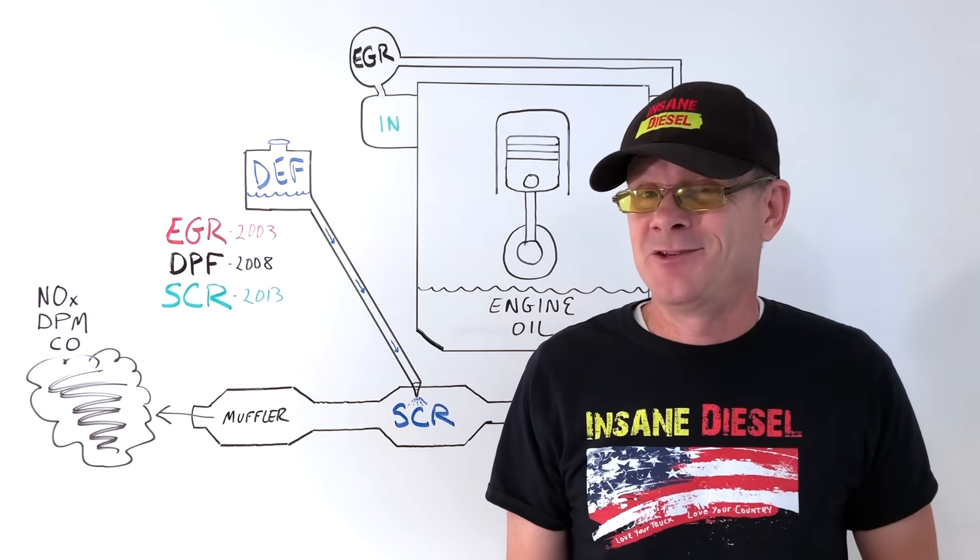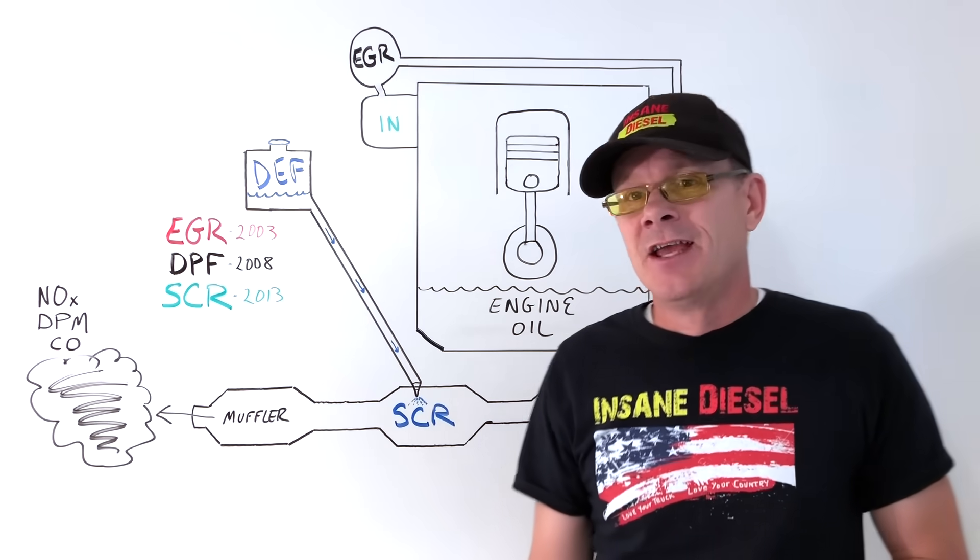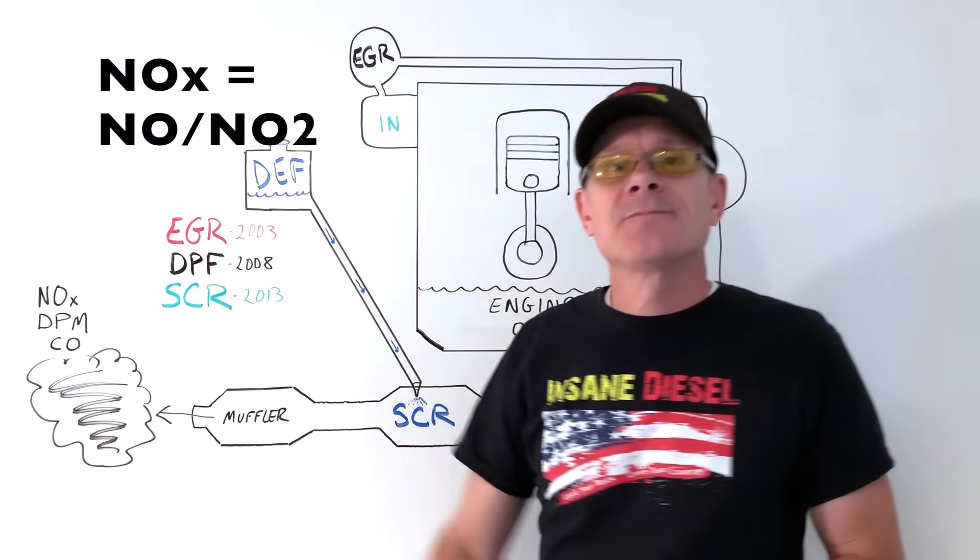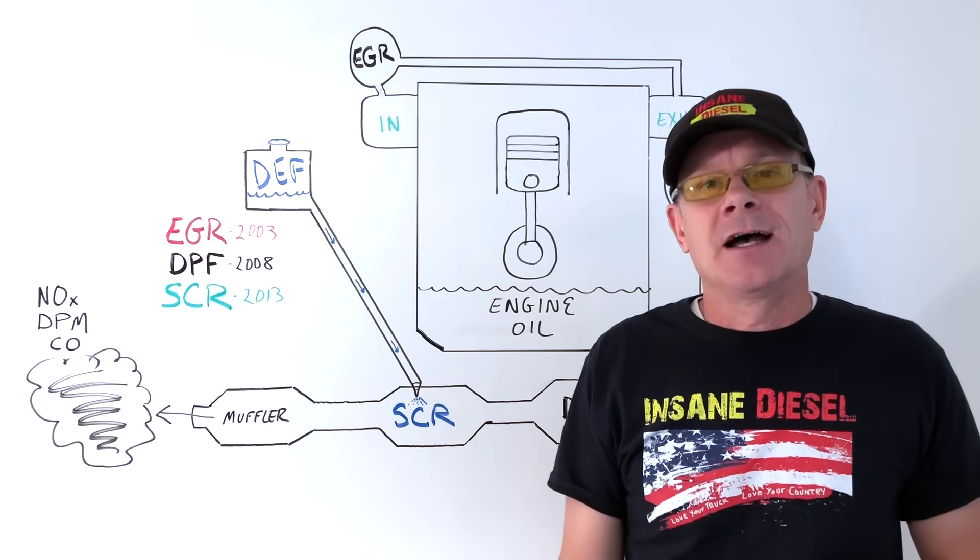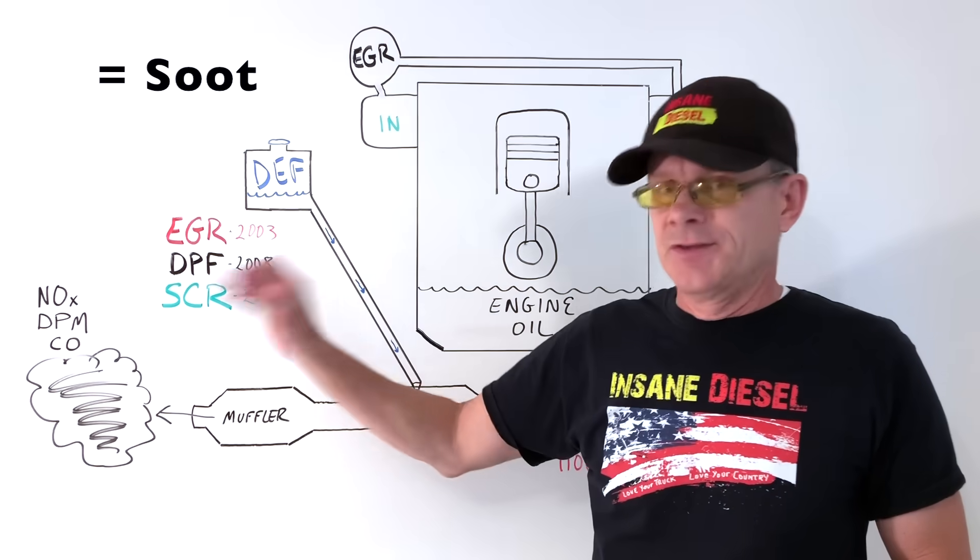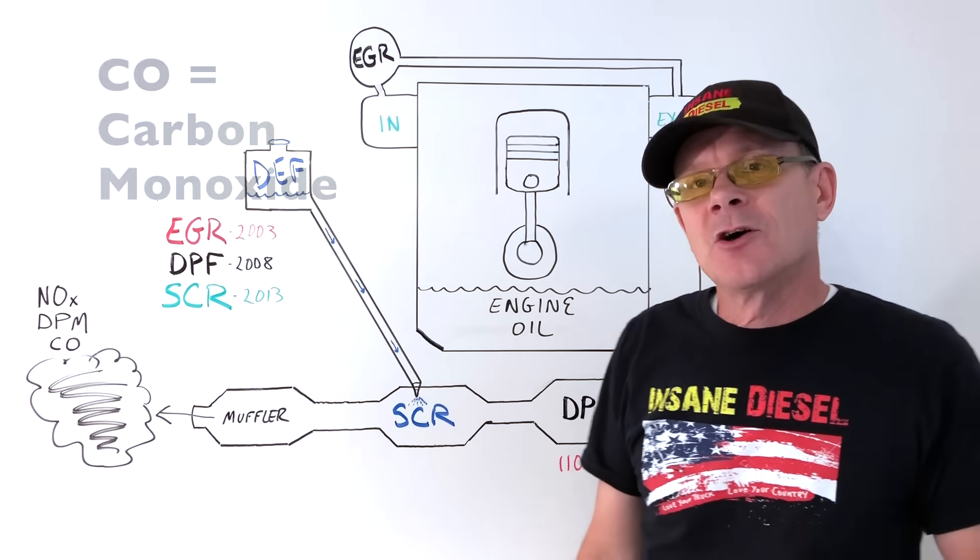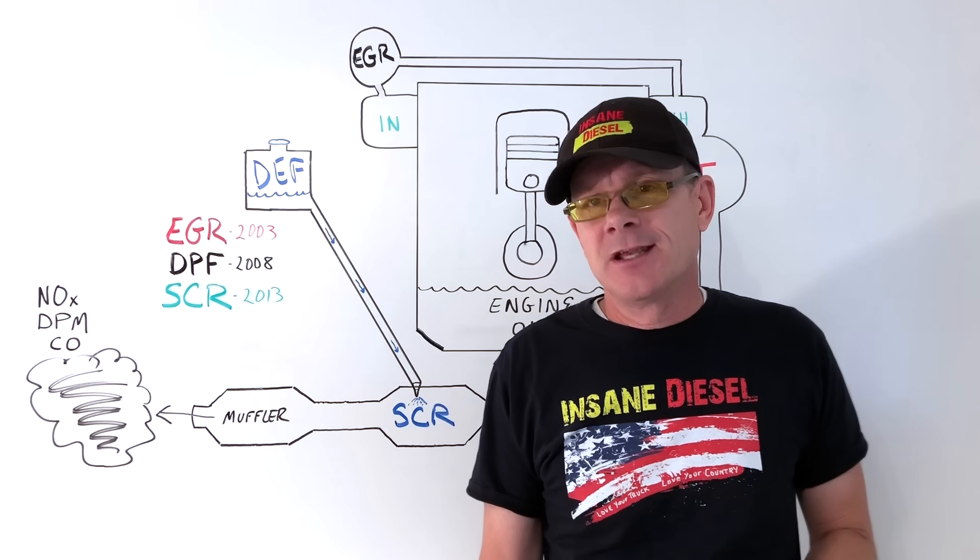What emissions, you may ask? There are several emissions that the government became concerned with on diesels in particular, including the nitric oxides expressed with NOx, diesel particulate matter, which is your black smoke or soot that comes out the engine, and carbon monoxides. So, now let's see what each emission system does.